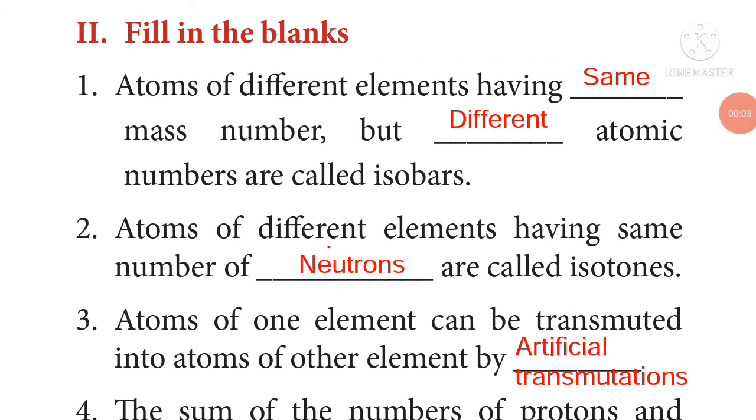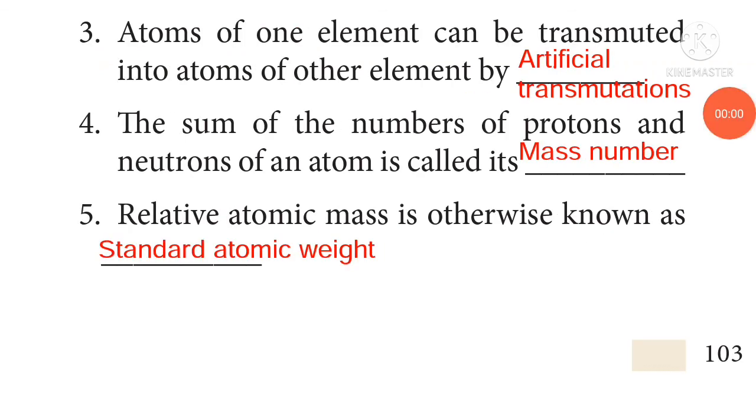Fill in the blanks: Atoms of different elements having same mass number but different atomic numbers are called isobars. Atoms of different elements having same number of neutrons are called isotones. Atoms of one element can be transmuted into atoms of other element by artificial transmutations. The sum of the numbers of protons and neutrons of an atom is called its mass number.